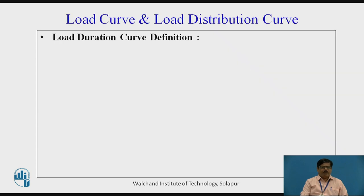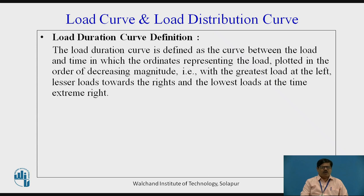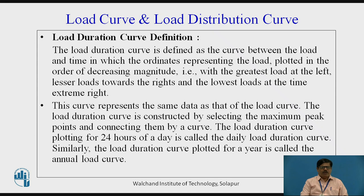Now, let us see what do we mean by Load Duration Curve. Load Duration Curve is defined as the curve between load and time in which ordinates representing the load are plotted in the order of decreasing magnitude. We take the time and plot the load with the greatest load at the left and lesser loads towards the right and lowest loads at the extreme right. Thus, the Load Duration Curve represents the same data as the Load Curve, but the only difference is that the time is not taken in chronological sequence. The load duration curve is constructed by selecting the maximum peak points and connecting them by a curve. The Load Duration Curve plotted for 24 hours of a day is called the Daily Load Duration Curve, and if plotted for a year, it is called the Annual Load Duration Curve.